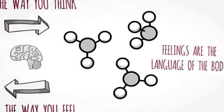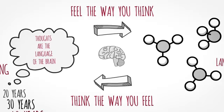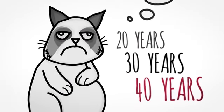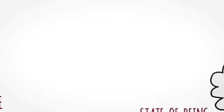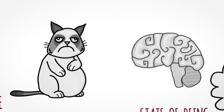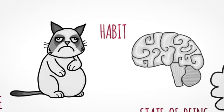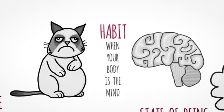And as people get caught in this cycle of thinking and feeling and feeling and thinking, over time, they condition their body to memorize that emotion as well as the conscious mind. And whenever the body knows as well as the mind, that's called a habit. A habit is when your body is the mind.